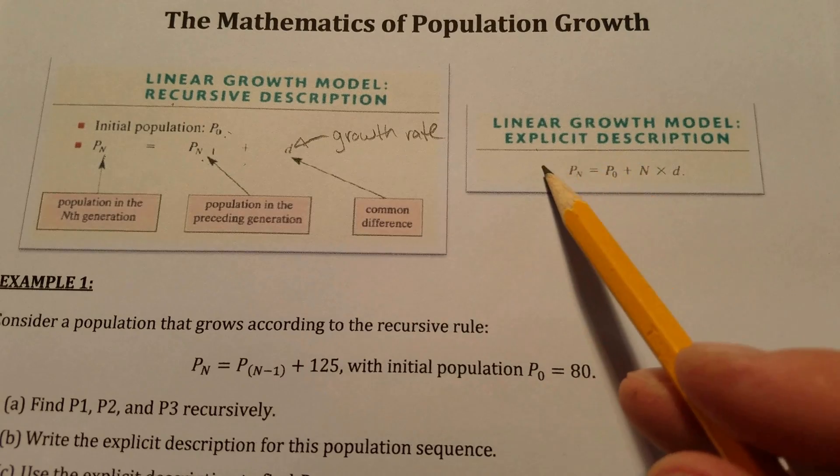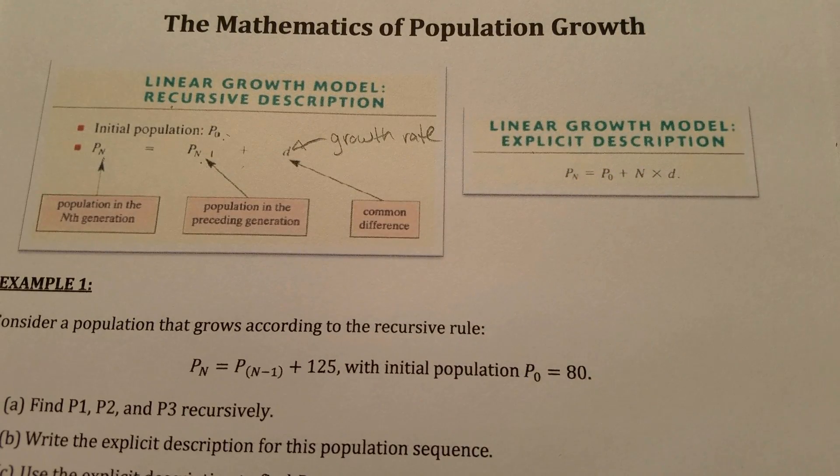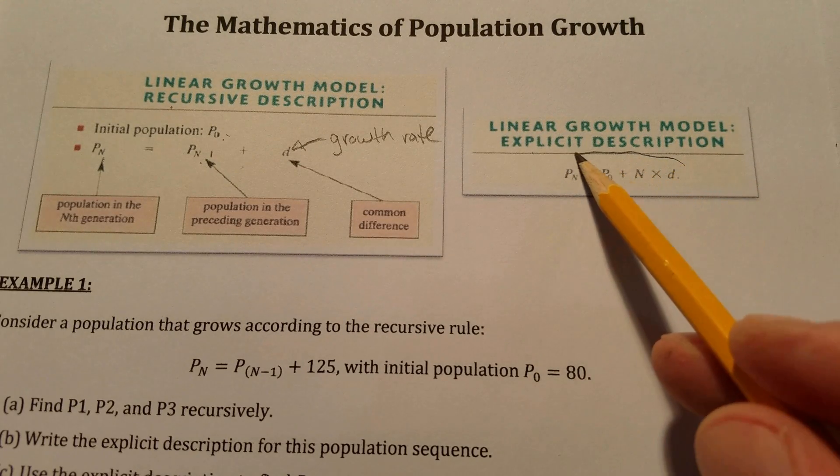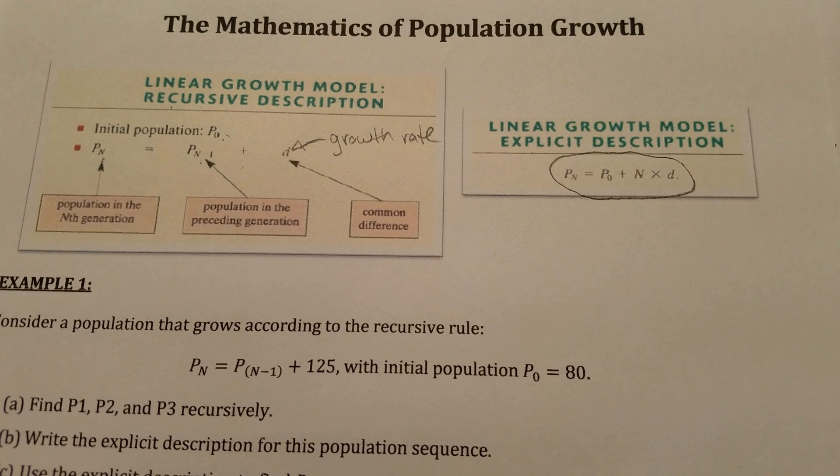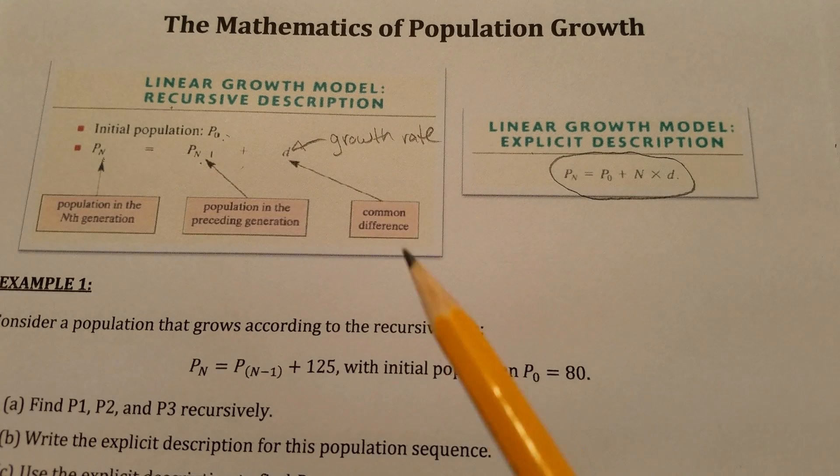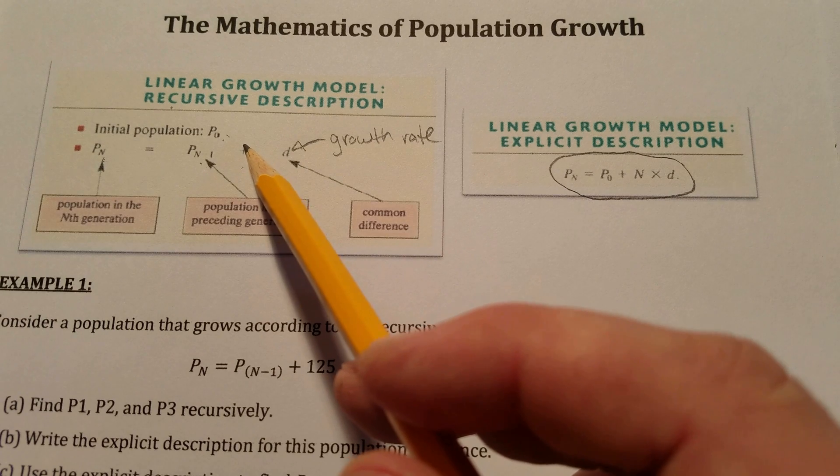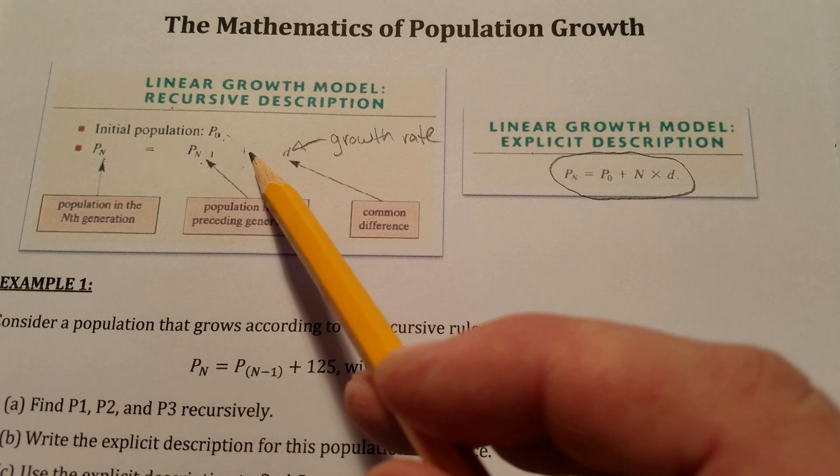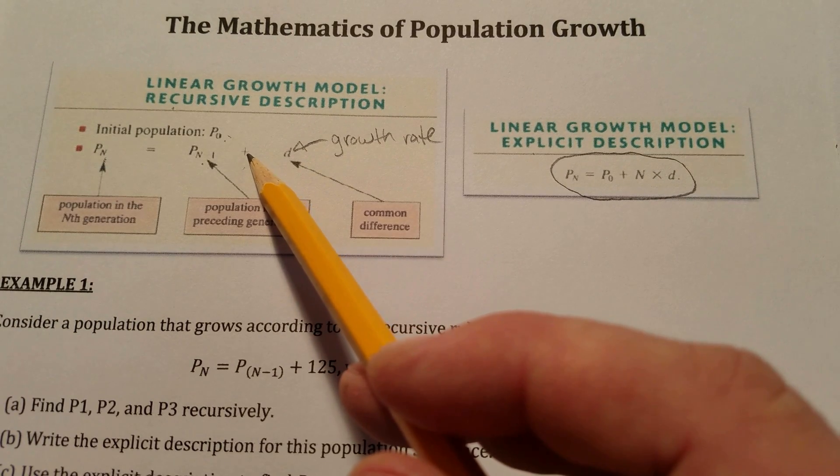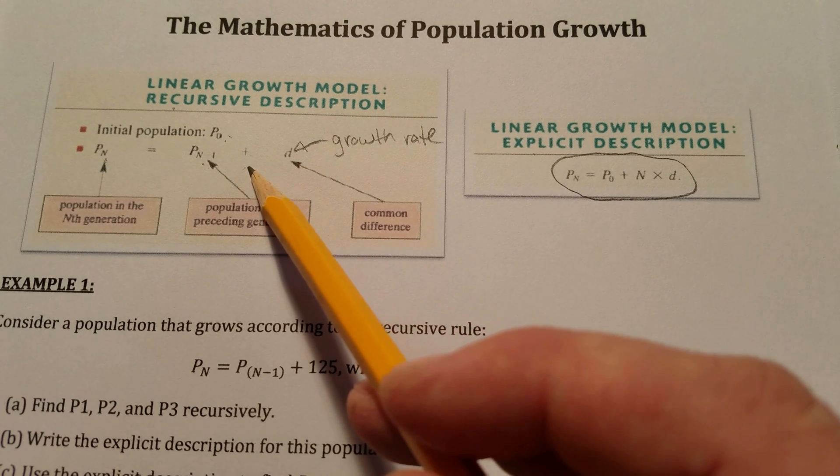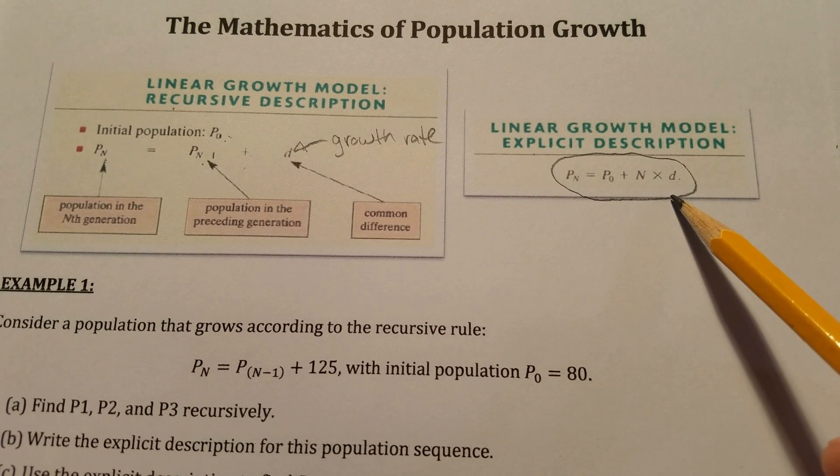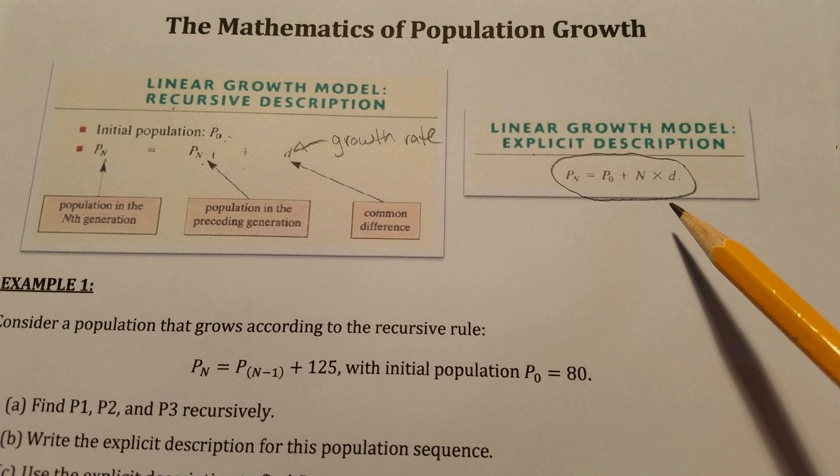Over here, we see that the population is being defined explicitly. This becomes useful when we're dealing with skipping numerous generations, because with the recursive model, we need to calculate each generation independently. So if we wanted to get to generation five, we would have to do five calculations, whereas with the explicit description, we can jump straight to generation five.